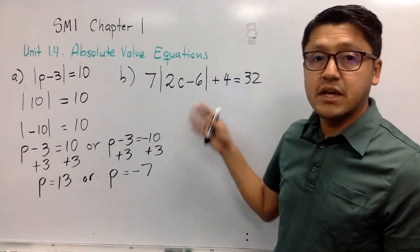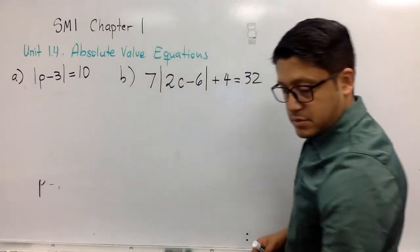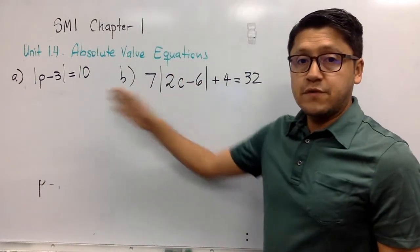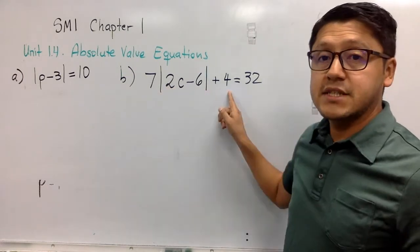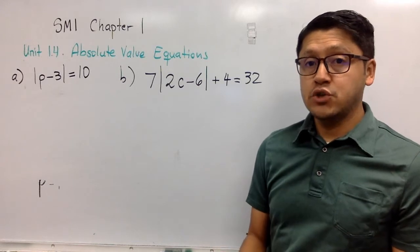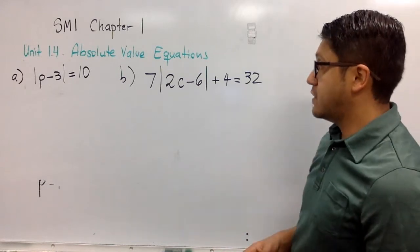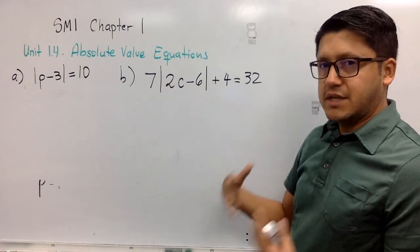Now with that in mind, let's take a look at the second example. I cannot do the first analysis I did here because the absolute value is not isolated yet. So I'm going to make sure I do that first. I need to get rid of this 7 and then I need to get rid of this 4. Is that the right order? I don't think so.